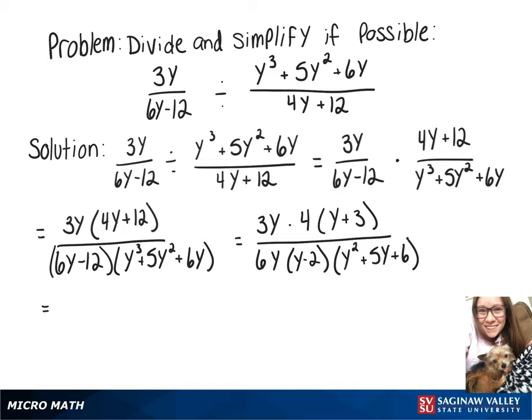Now on top, 3y times 4 gives us 12y, which I'm going to rewrite as 6y times 2. And then we still have our y plus 3. On the bottom, we have 6y times y minus 2. And then we have a quadratic there, which can factor into y plus 3 times y plus 2.